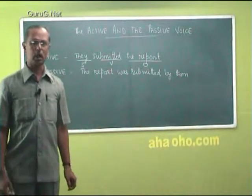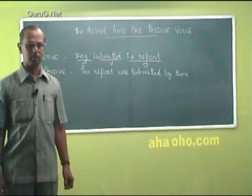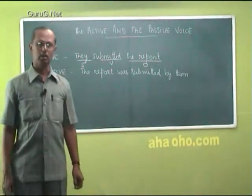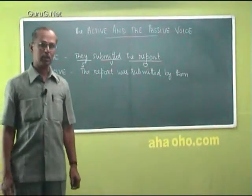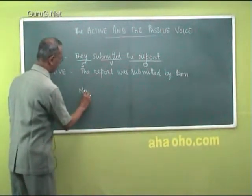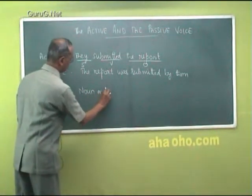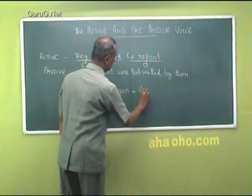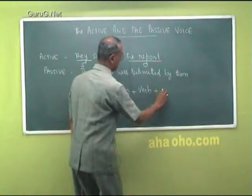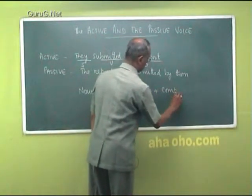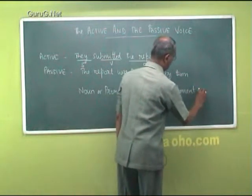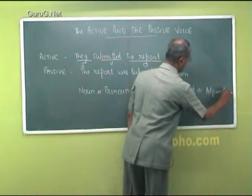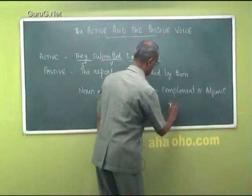The tense, however, cannot be changed. The pattern of the passive voice is: noun or pronoun, plus verb, plus the complement or adjunct, plus the agent.